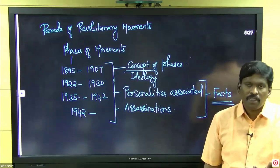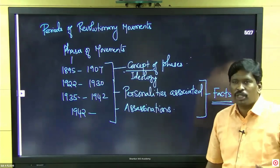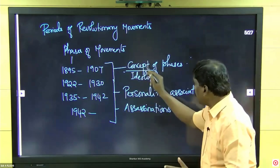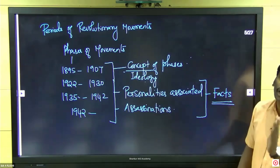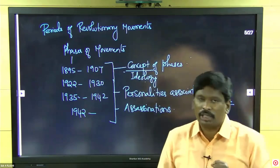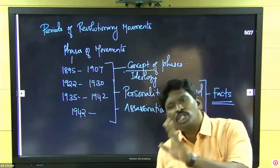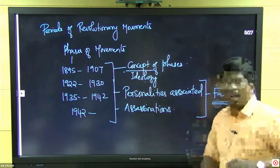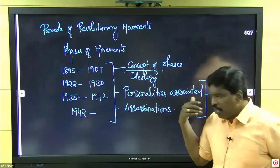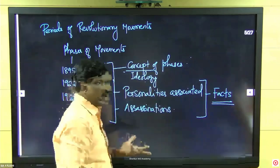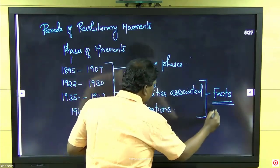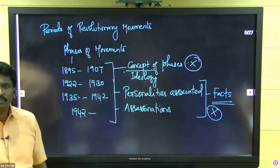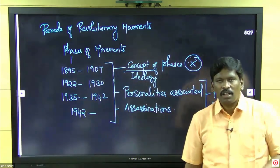In the last 25 years of question papers, most questions are from the personalities associated area. Conceptual questions are also important. In the revolutionary movement, gather detailed factual information: personalities associated with which association, which era, and what assassinations they were involved in — for example, Curzon Wyllie and similar cases.